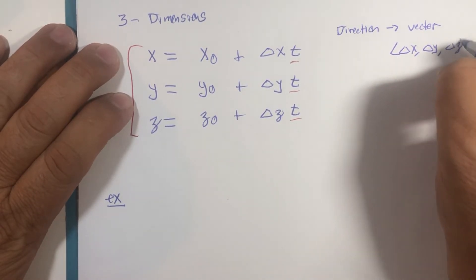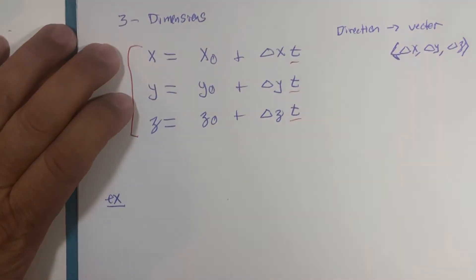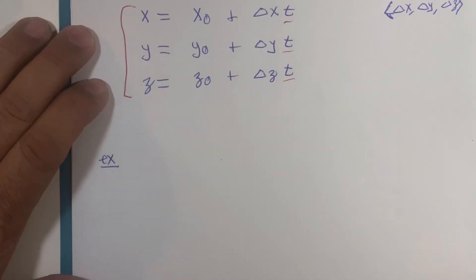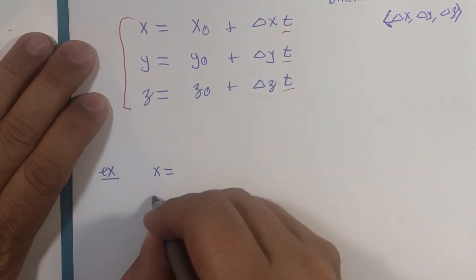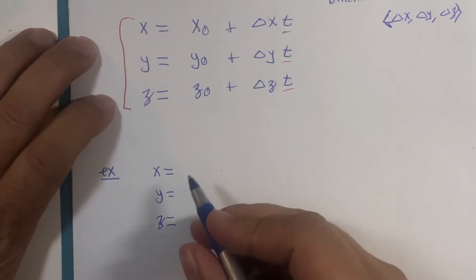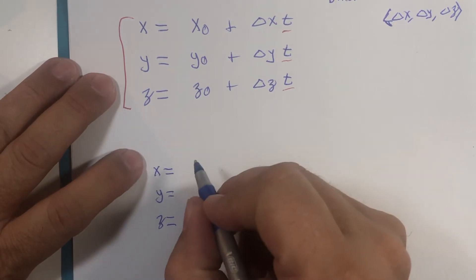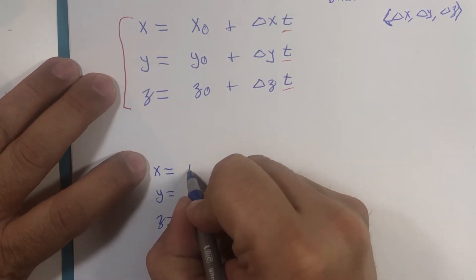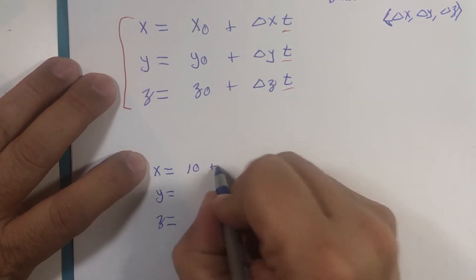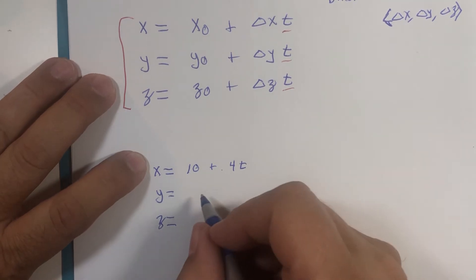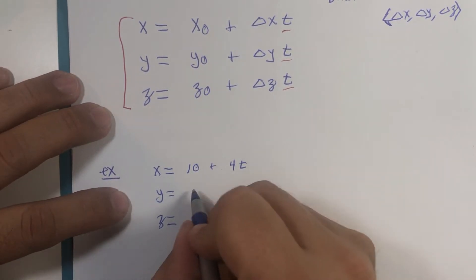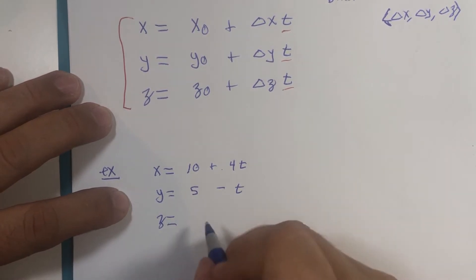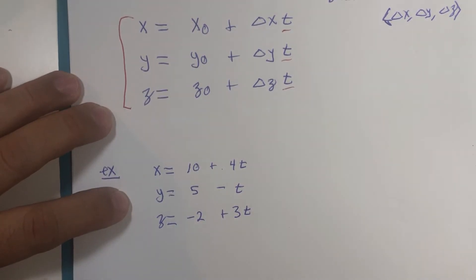A quick little example. If I were to write these three equations: X equals, Y equals, Z equals. Let's say X = 10 + 4t and Y = 5 - t and Z = -2 + 3t.